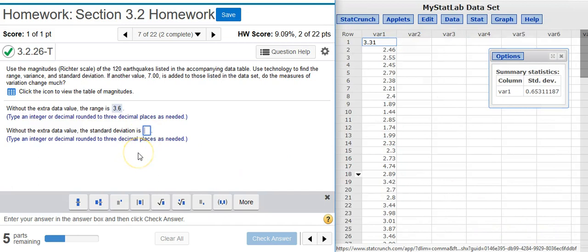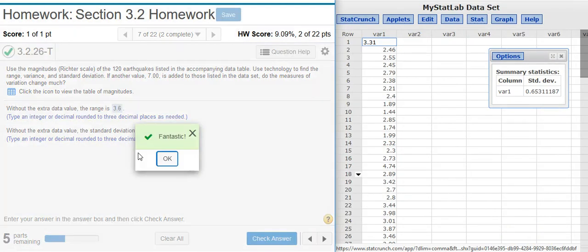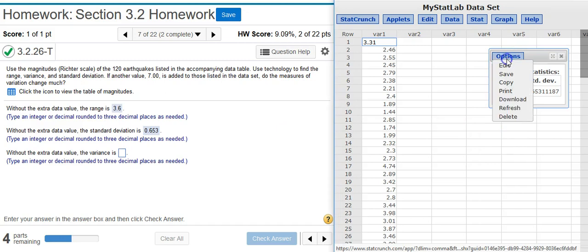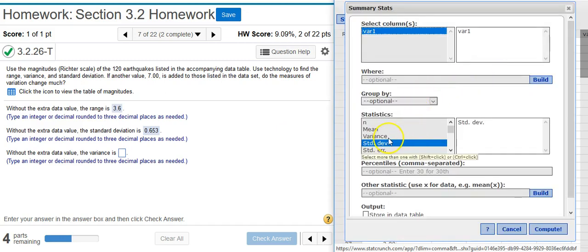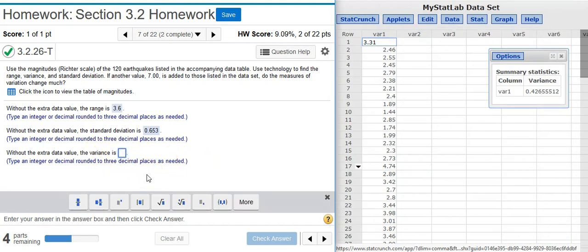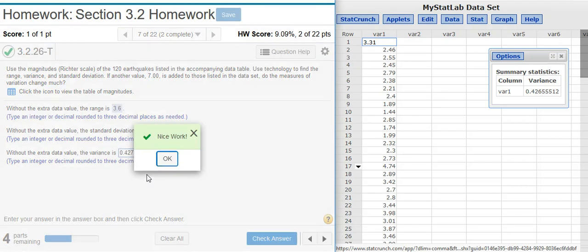I'm asked to round to three decimal places. Fantastic! The next part asks me to calculate the variance, so I go back to my Options window, switch over to the variance. I'm asked to round to three decimal places again. Nice work!